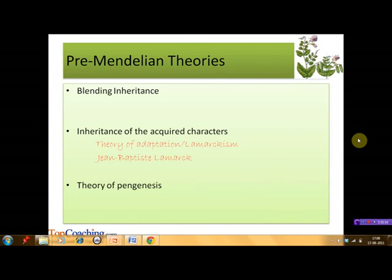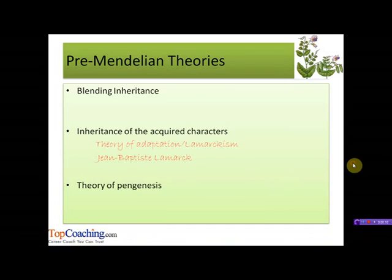Another important pre-Mendelian theory was the theory of pangenesis, proposed by Charles Darwin. According to it, all the body cells of an organism shed gemmules which get collected in the reproductive organs of the organism. These gemmules are then passed on to the offspring through sexual reproduction, where they determine the traits of the offspring. This idea was revised by another scientist, Francis Galton.